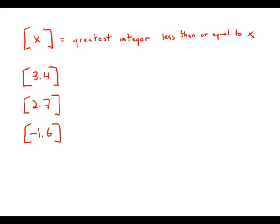If bracket x bracket is the greatest integer less than or equal to x, what is the value of this expression with the brackets in it? So this is an actual function that they use in mathematics, the greatest integer function. And so let's apply this.